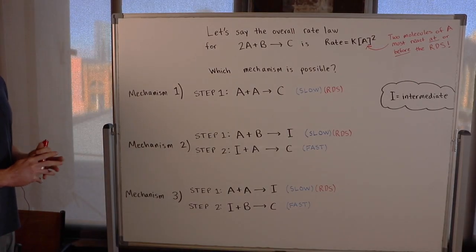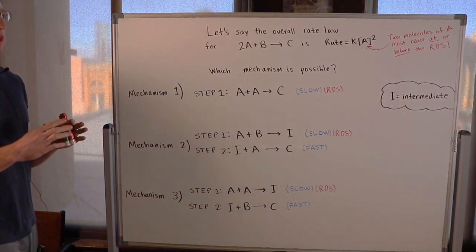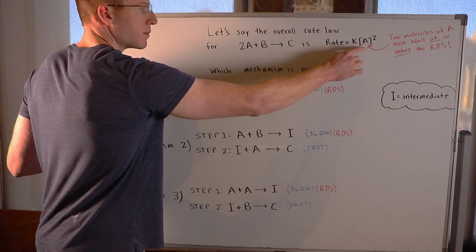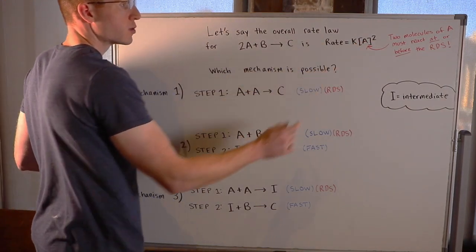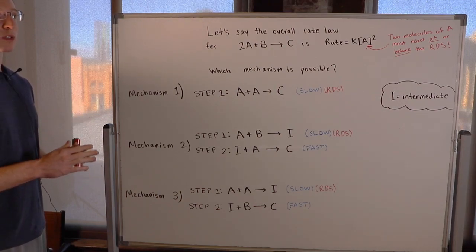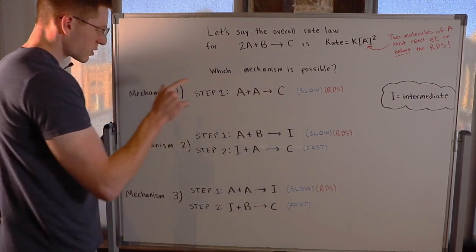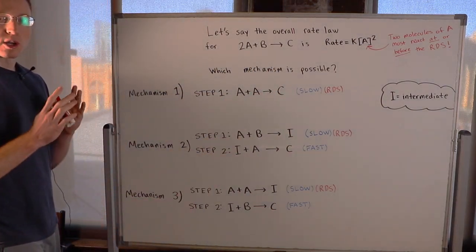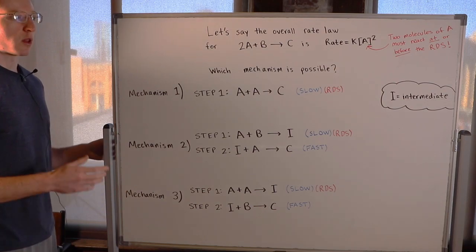Let's do this example problem. Say the overall rate law for the reaction 2A + B → C looks like this: rate equals the rate constant times the concentration of A squared. This means that two molecules of A must react at or before the rate determining step, or slow step. I want to know which of these three mechanisms is a possible mechanism for this situation. I've used the letter I to denote an intermediate for all of these mechanisms.